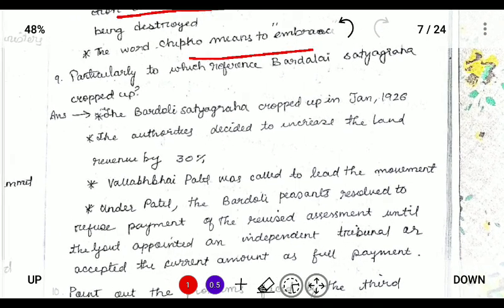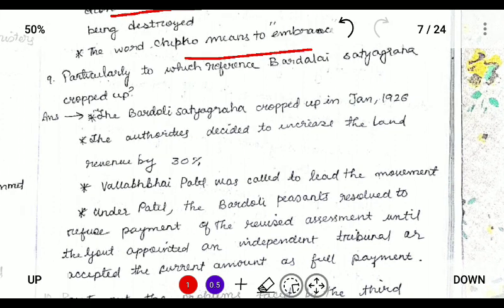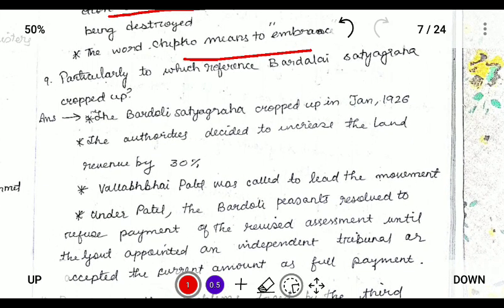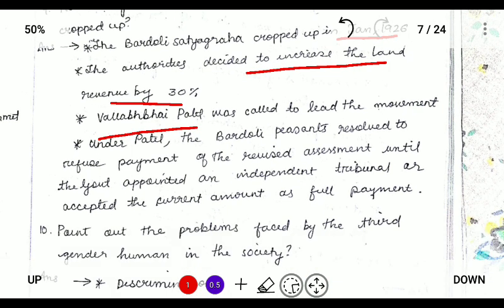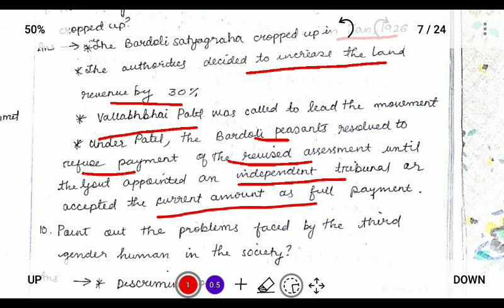Next: to which reference did the Bardoli Satyagraha crop up? The Bardoli Satyagraha cropped up in 1928 and it was decided to increase the land revenue by 30%. Vallabhbhai Patel was the leader, and under this the Bardoli peasants resolved to refuse payment of the revised assessment until the government appointed an independent tribunal or accepted the current payment as full payment.